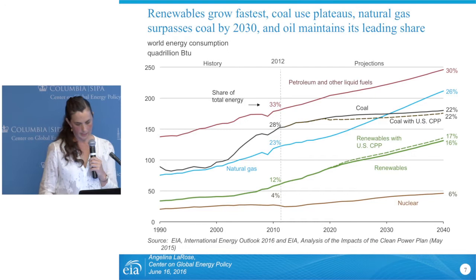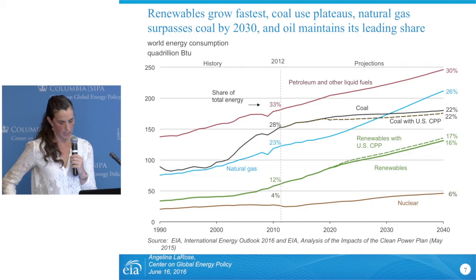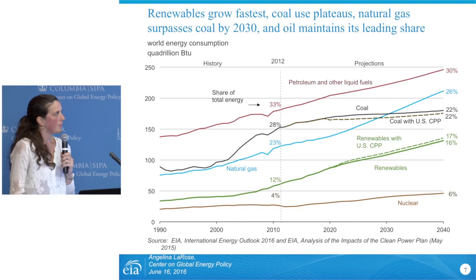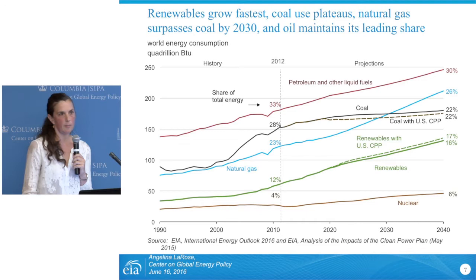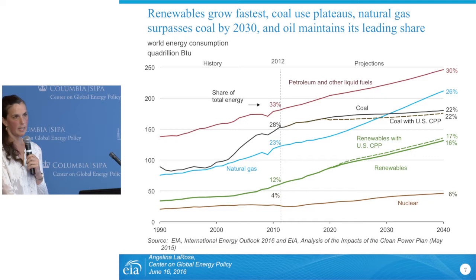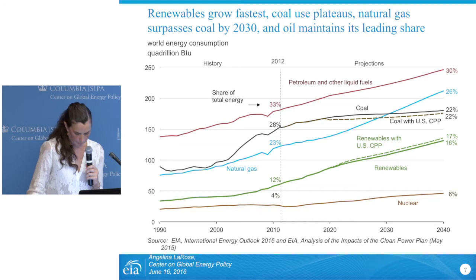Looking at energy use by fuel, use of all fuels grows throughout the projection period, and as mentioned, renewables is the fastest growing fuel. I'm presenting results from our reference case, which reflects current laws and regulations. At the time of modeling, the Clean Power Plan had not been finalized. The dotted line for the U.S. Clean Power Plan includes findings from a previous EIA analysis on the CPP's implementation — it would lower coal use and increase renewable use.